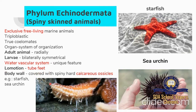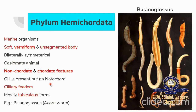The last phylum of invertebrates is Phylum Hemichordata. Hemichordates are marine organisms with soft, vermiform, and unsegmented bodies. They are bilaterally symmetrical, coelomate animals with both non-chordate and chordate features. They have gill slits but do not have a notochord. They are ciliary feeders and mostly found as tubiculous forms. Example: Balanoglossus.